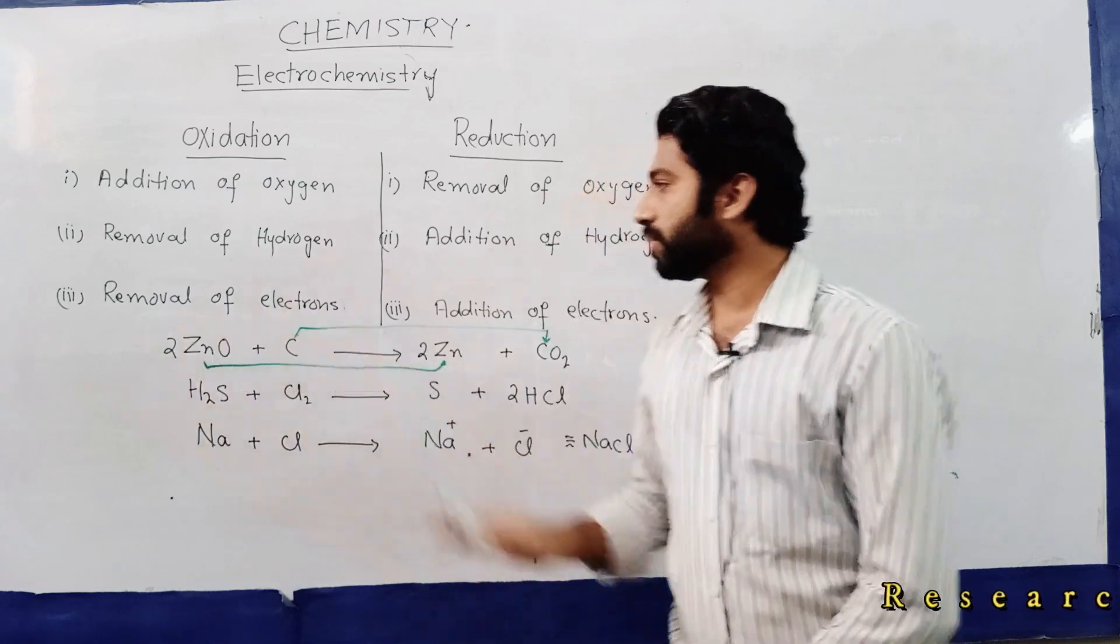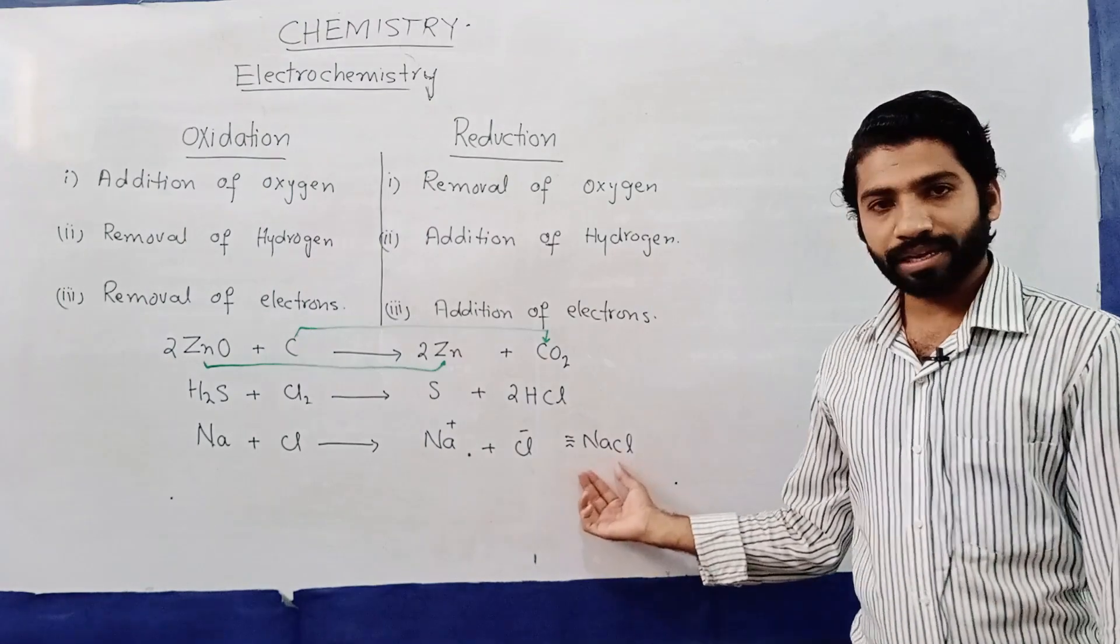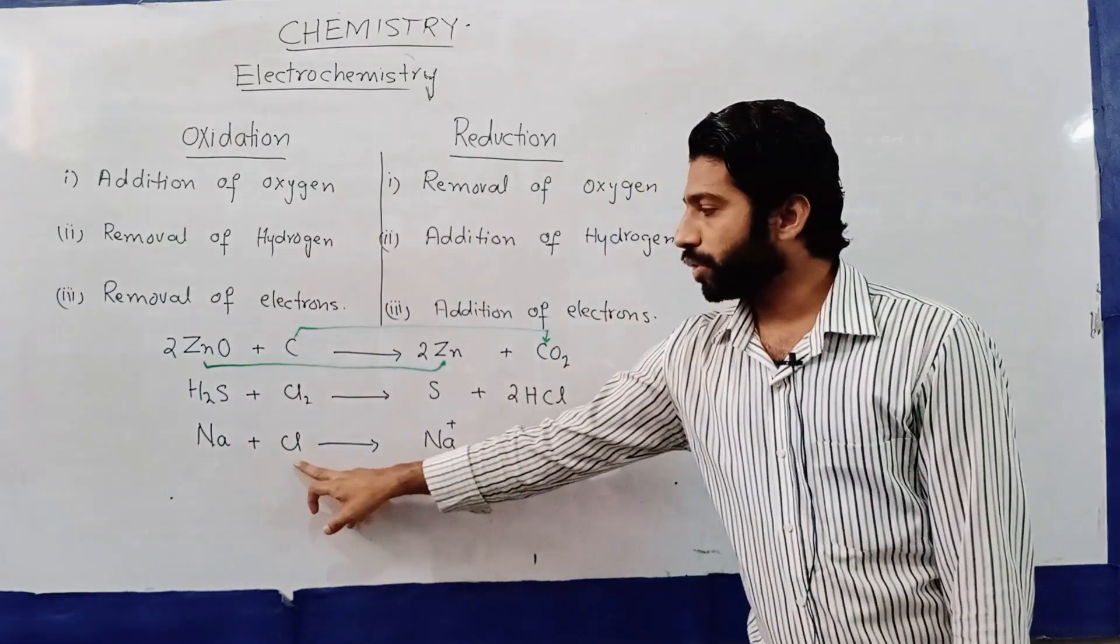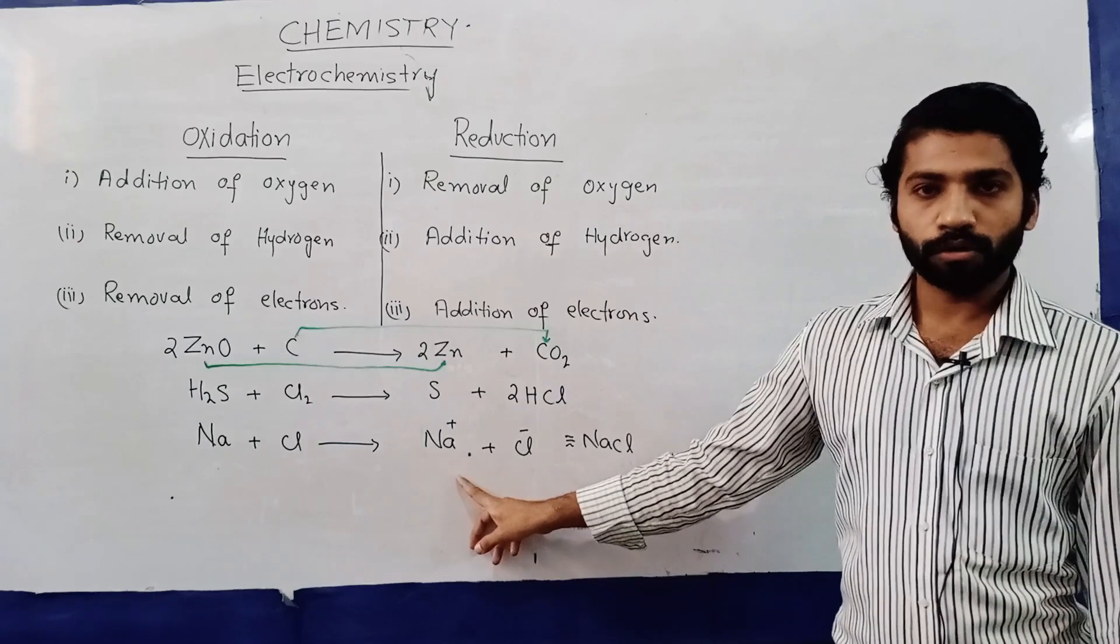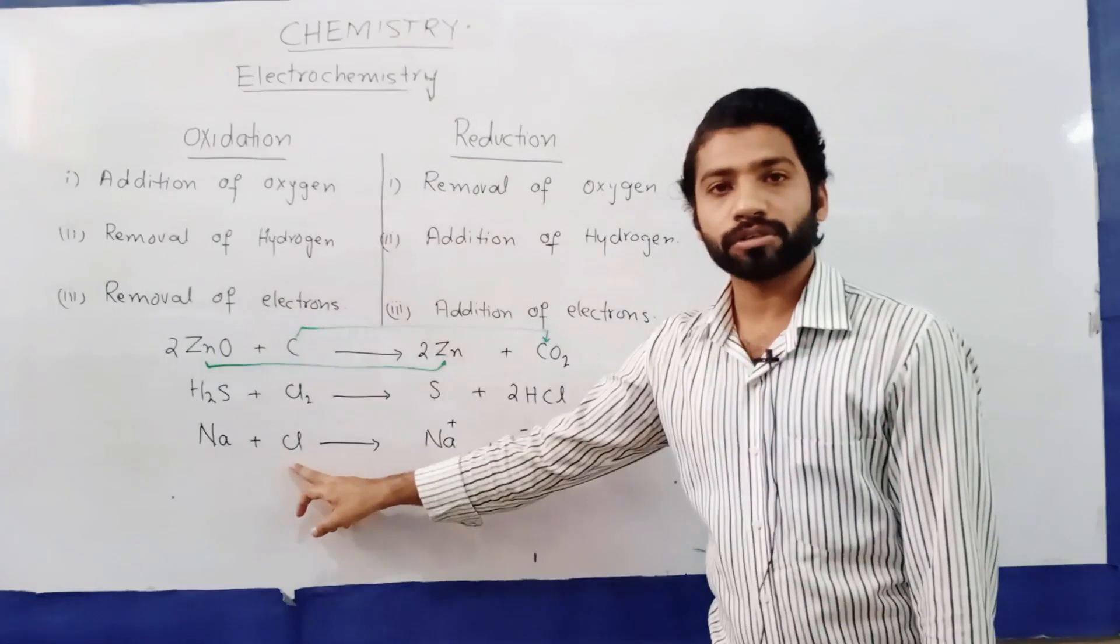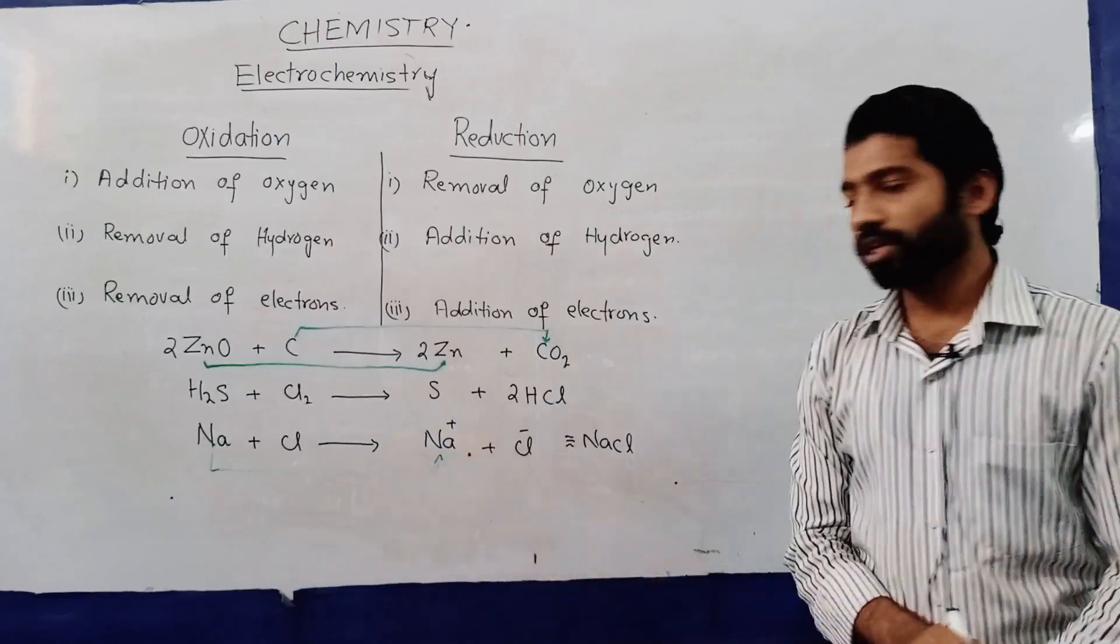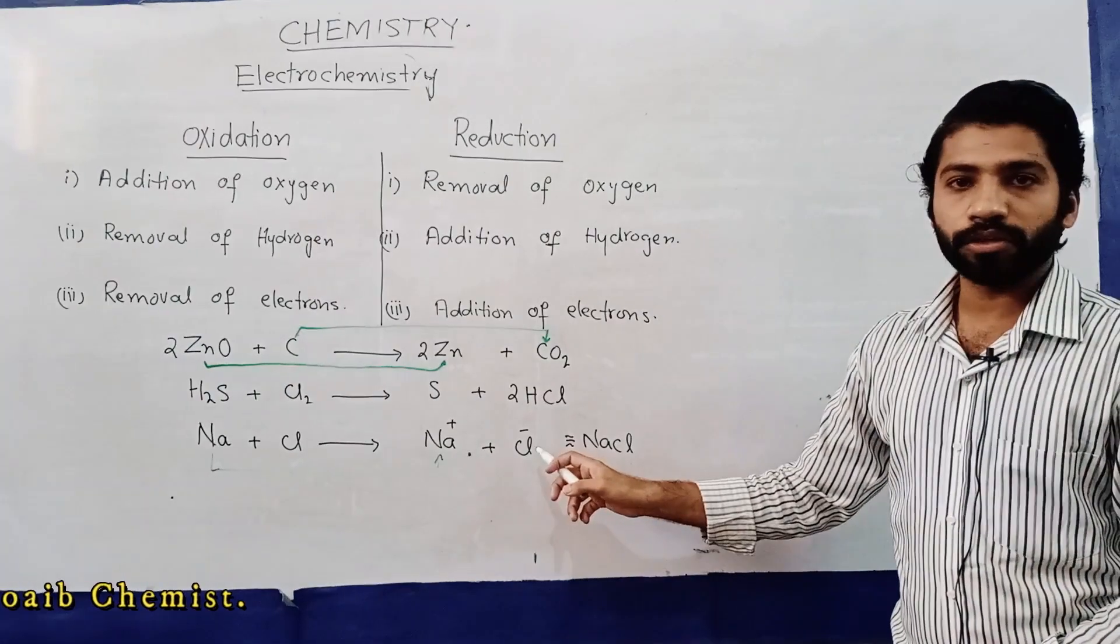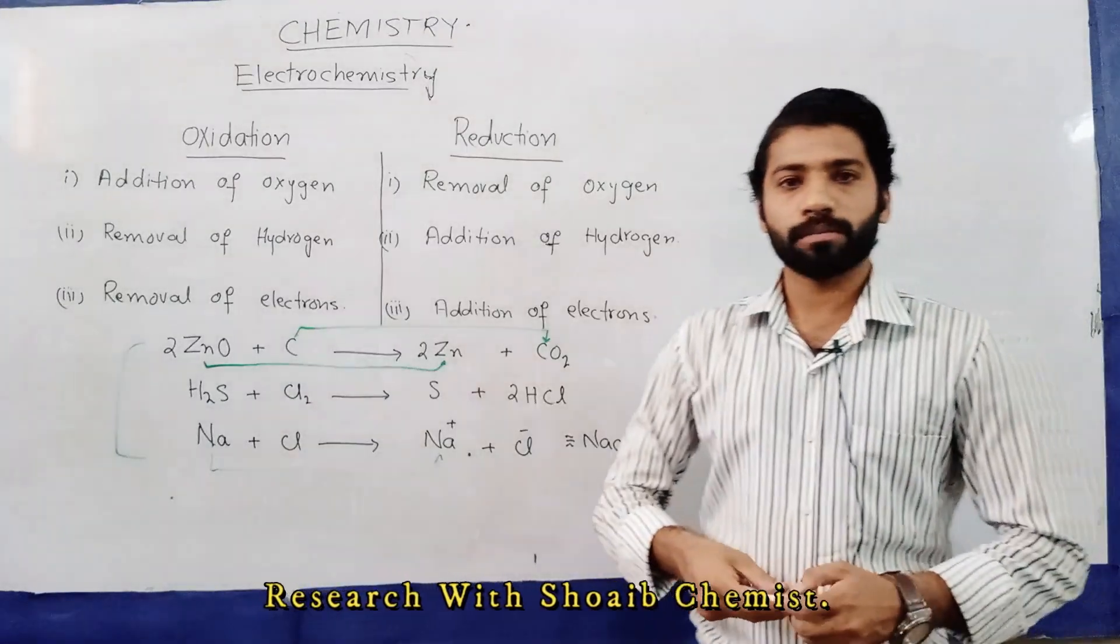The third definition is removal of electron and addition of electron. Suppose sodium Na reacts with chlorine Cl to form Na positive and Cl negative, which forms NaCl. Here, sodium removes one electron from its outermost shell and chlorine adds an electron. This means sodium has donated one electron creating a positive charge, and chlorine has gained that electron. So this is an oxidation step, where sodium becomes Na positive.